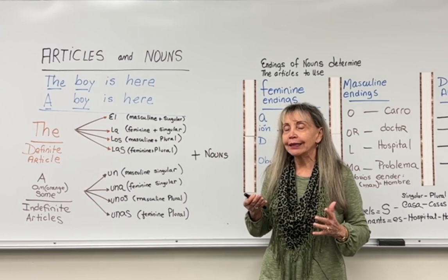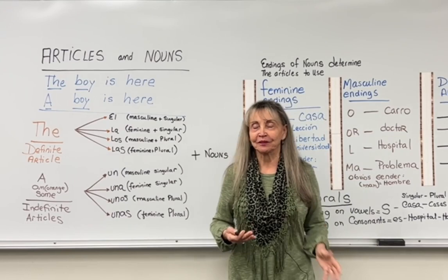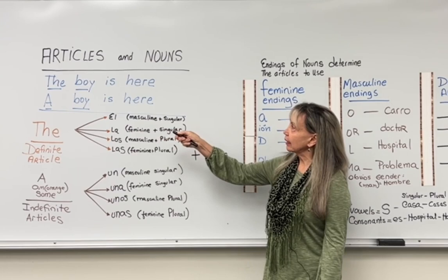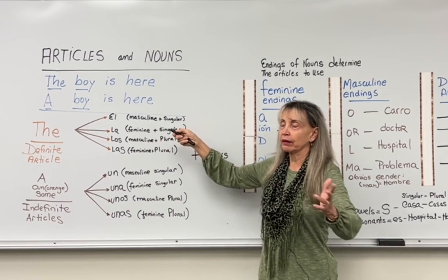I am going to begin with two sentences in English and ask you a question, and you will figure out what to do once you know the answer. These two sentences are: 'The boy is here' and 'A boy is here.' What is the difference between these two sentences?